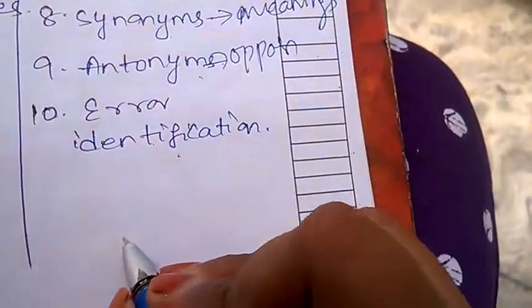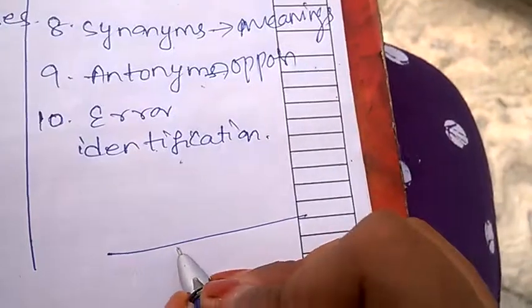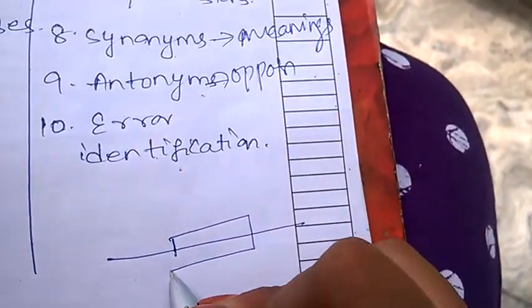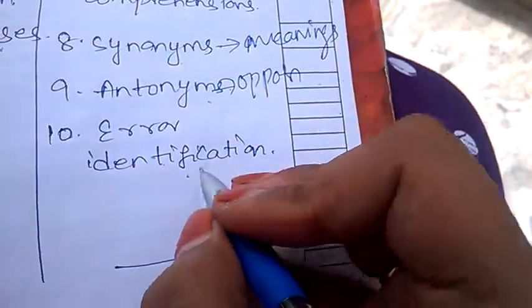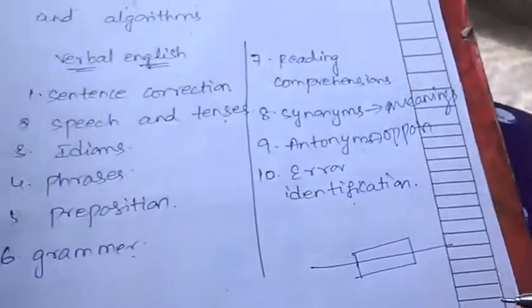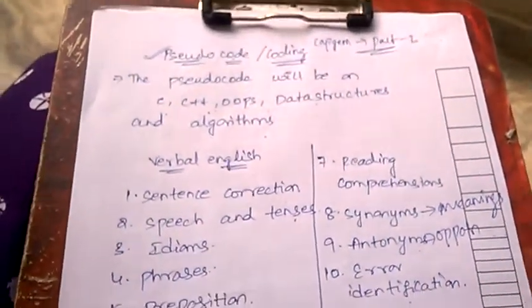Error identification means they'll be giving you a sentence. You need to identify what error is there in that sentence. That is meant by error identification. That's it for today. Thank you so much for watching this video.